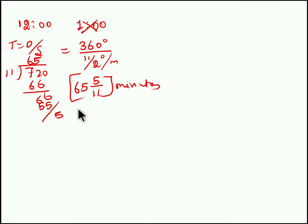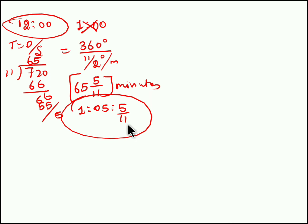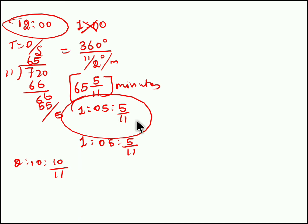We can write 65 5/11 minutes as 1 hour and 5 minutes, since 1 hour is 60 minutes — so 1 hour, 5 minutes and 5/11 seconds. For every 1 hour 5 minutes and 5/11 seconds, both needles will coincide. We know exactly at 12 o'clock both needles coincide. After 12 o'clock, they will coincide at 1 o'clock 5 minutes and 5/11 seconds. After another 65 5/11 minutes, they coincide again — which you can find by adding 1 hour 5 minutes and 5/11 seconds, giving 2 o'clock 10 minutes and 10/11 seconds. So you can simply multiply the base interval by the hour number.